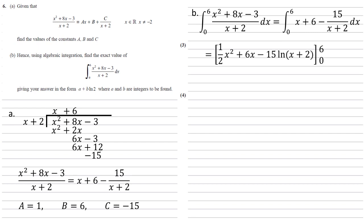6 becomes 6x. 15 over x plus 2 becomes 15 log natural of x plus 2. And there's our bounds on the right hand side of the 0 and 6, which we're now going to substitute in. So we substitute 6 into the first bracket.